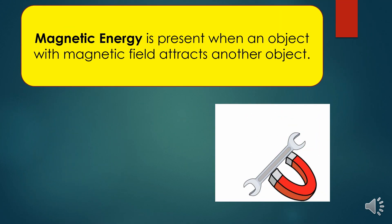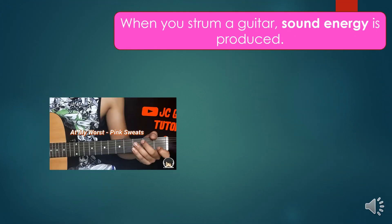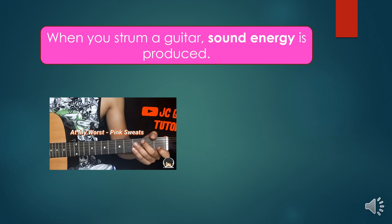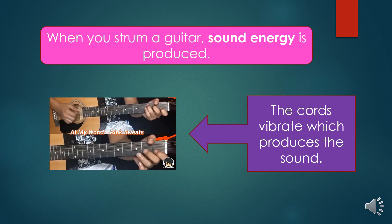Magnetic energy is present when an object with magnetic field attracts another body. Magnets have magnetic energy. When you strum a guitar, sound energy is produced. The chords vibrate, which produces the sound.